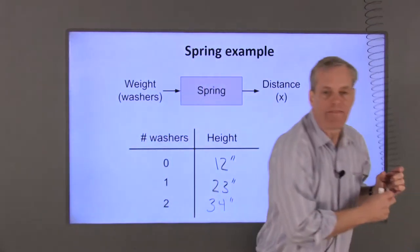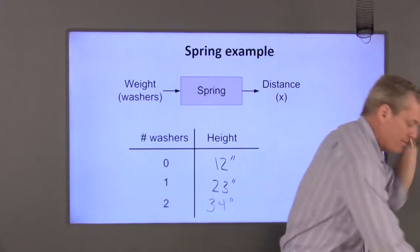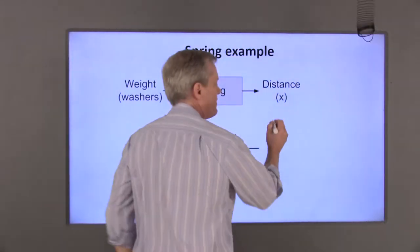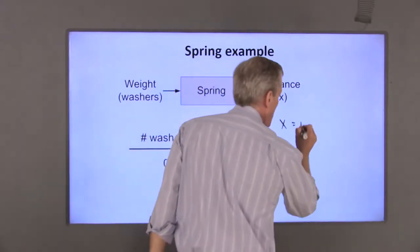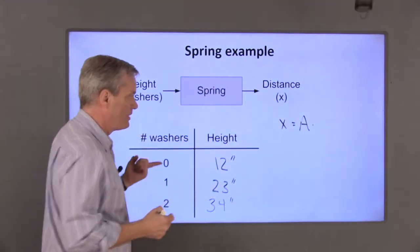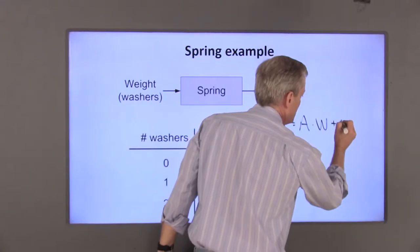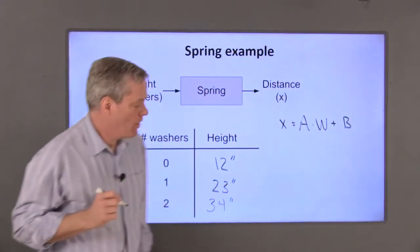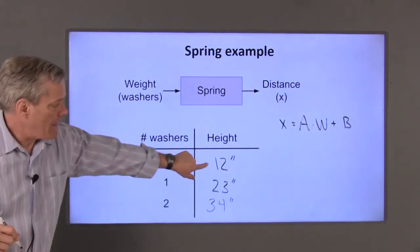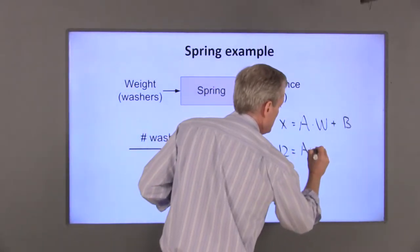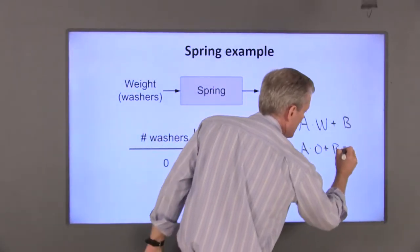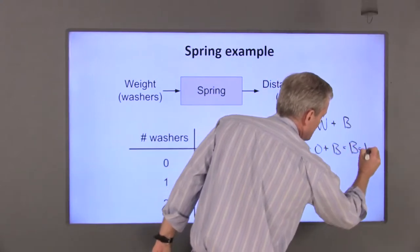Now let's take a look at what our mathematical relationship is going to be. I'm going to assume that the distance X is equal to some number A times the number of washers W, plus another number B. With zero washers, X is 12. So 12 is equal to A times zero plus B, which means that B is equal to 12 inches.